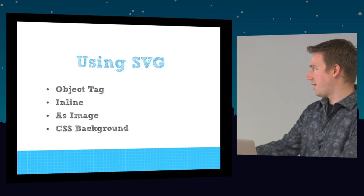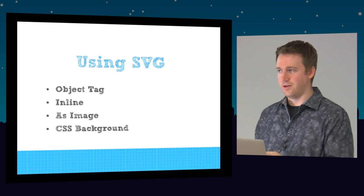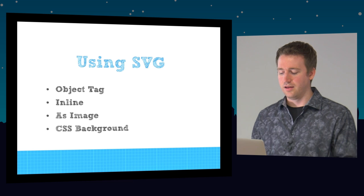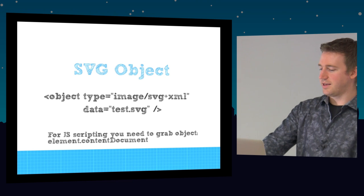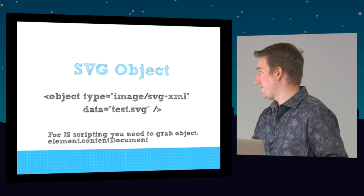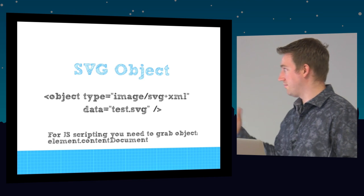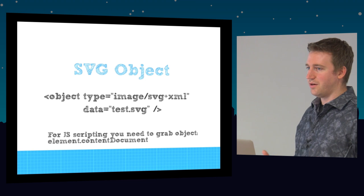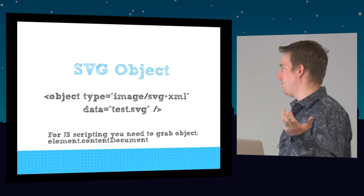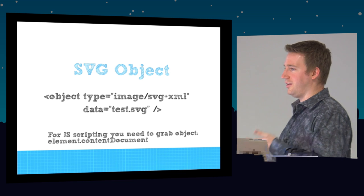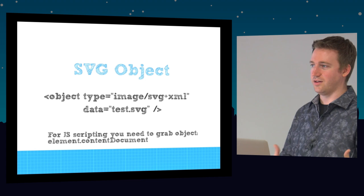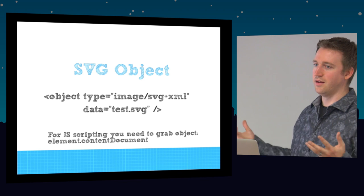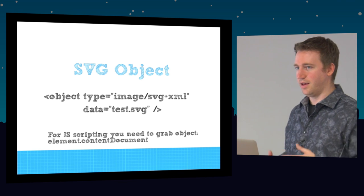So how do we use SVG? One way to embed SVG is through an object tag. You use the object tag and add your SVG, and that object will show up in your page. When we're talking about scripting, you can grab the element and then do element.contentDocument to get access to the SVG inside the object and play around with it.